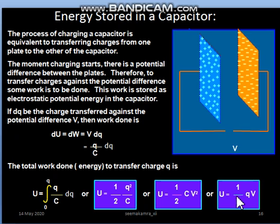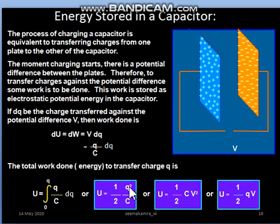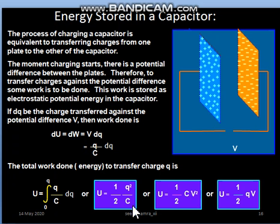There are two more formula forms shown. The first is U = q²/2C, which gives energy in terms of q and C. If we replace q with CV, we get the energy in terms of C and V only, giving U = ½CV². The third formula is in terms of q and V: by removing C from the formula and substituting C = q/V, we obtain U = ½qV.